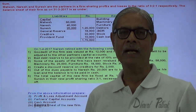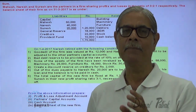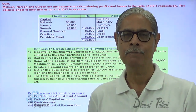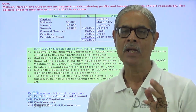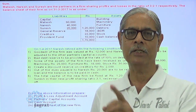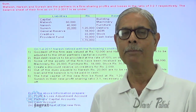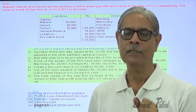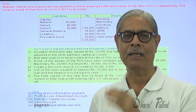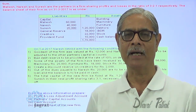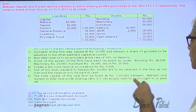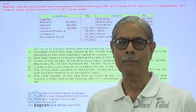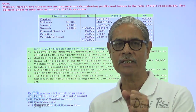For the purpose of solving this sum: first step, consider revaluation adjustment. Second step, copy the remaining details of the balance sheet. Third step, close the revaluation account or profit and loss adjustment account and distribute the profit or loss on revaluation to all the partners in the profit sharing ratio. After that, consider the adjustment for goodwill — goodwill is adjusted to capital accounts based on gain ratio. Finally, consider capital adjustment where total capital of 1,20,000 is to be maintained in the new profit sharing ratio.